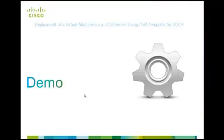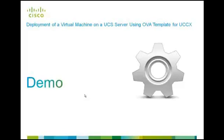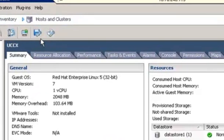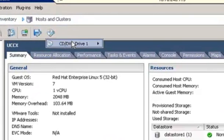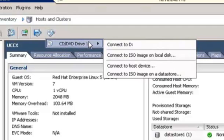This is a continuation of the deployment of a virtual machine on a UCS server using an OVA template for UCCX. Following is the URL for that video. Here we have obtained the UCCX ISO file and we have stored it on the ESXi data store.